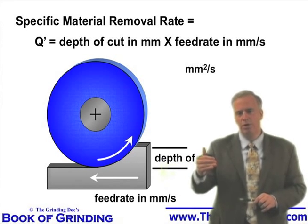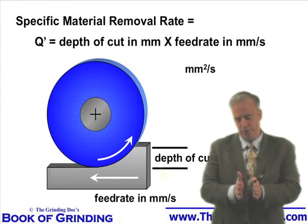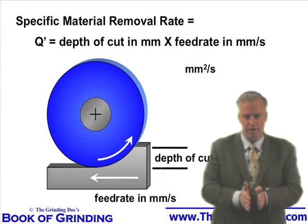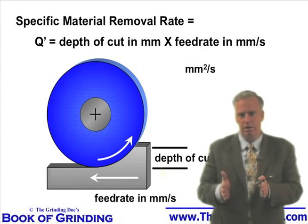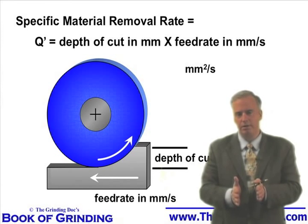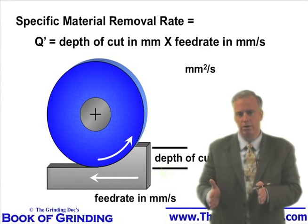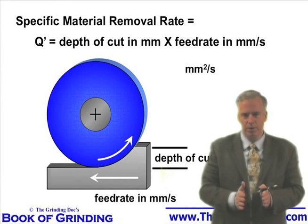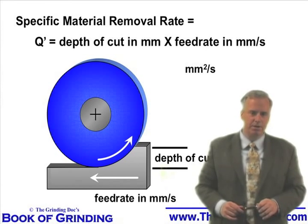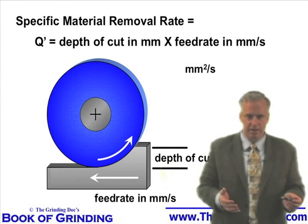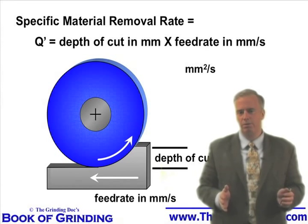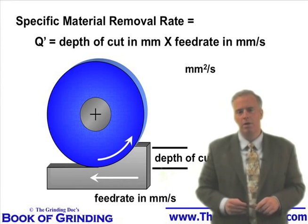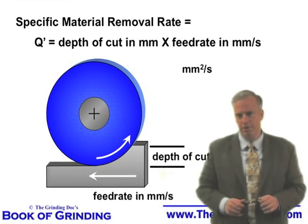What we do is take the wheel width out of the equation. Because if my wheel is one inch wide I'll have a certain material removal rate, and if my wheel is two inches wide I'll double my material removal rate — but it doesn't really matter, because now I've got double the width of wheel doing the work. So I haven't really changed my grinding conditions very much. We take the wheel width out and say: what's my material removal rate in square millimeters per second, which is depth of cut times feed rate in millimeters per second.